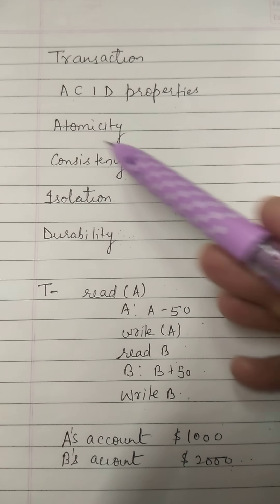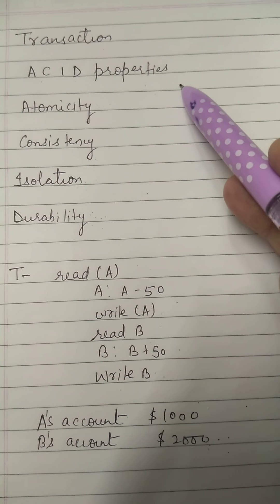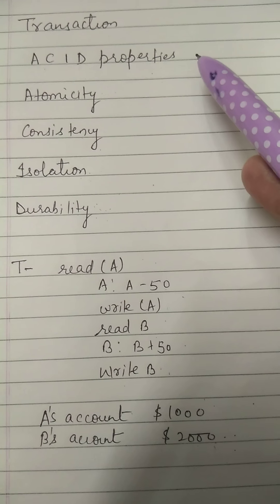These are the four properties of a transaction, that are ACID properties. Thank you so much.